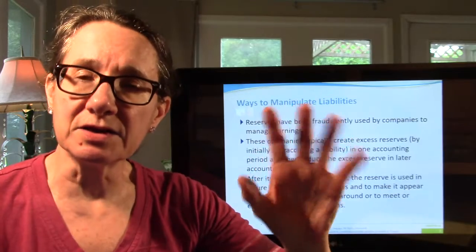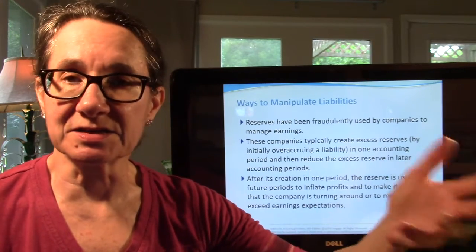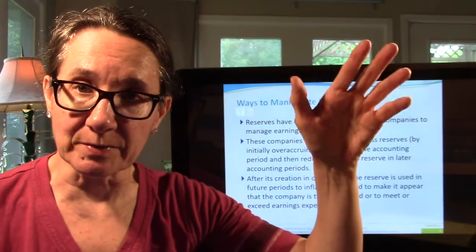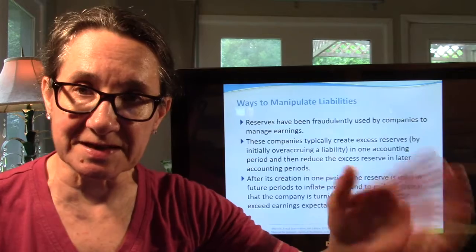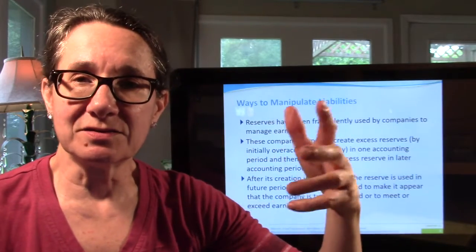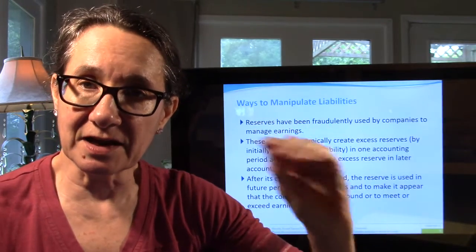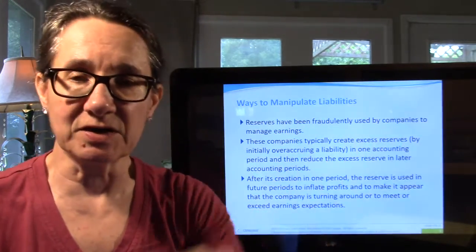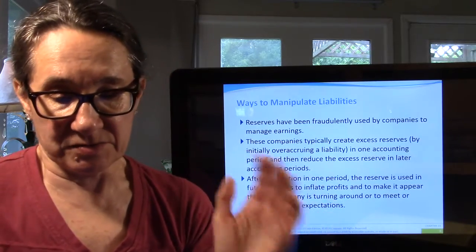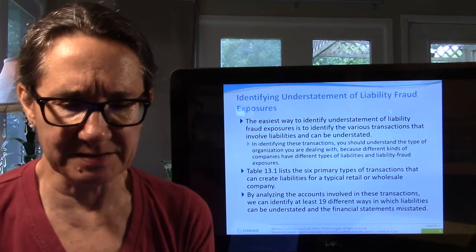In future periods, they say, 'Oh, we didn't use all that warranty reserve,' then release it, take less expense in the next period, and it looks like they have bigger net income. They want their net incomes to be smooth. If they have a period with really big net income, they'll stick some of that in reserves for the next period. Alternately, if they know they're going to have a loss, they take a 'big bath' — take even more of a loss, stick stuff in reserves, and then release it later to make net income look bigger. That's how reserves work: take a big reserve now, release it in a future period to meet earnings expectations.